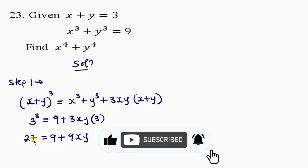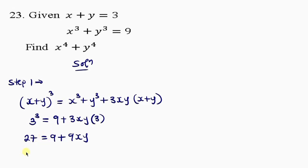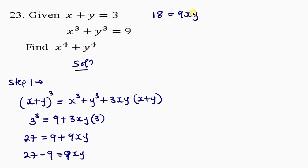I move the 9 to the left-hand side to become negative 9. So I have 27 minus 9 equal to 9xy. 27 minus 9 gives 18, equal to 9xy. To get the value of xy, I divide both sides by 9. So 18 divided by 9 gives xy equals 2. This is the value for xy.